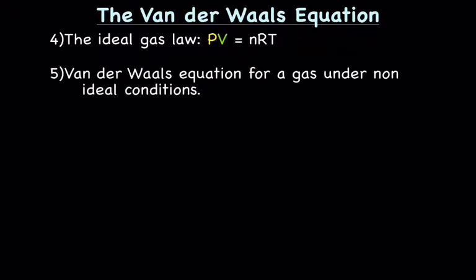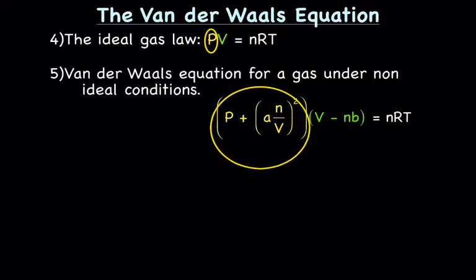The Van der Waals equation for a gas under non-ideal conditions is: [P + a(n/V)²](V - nb) = nRT.